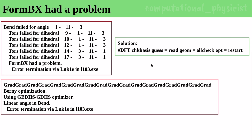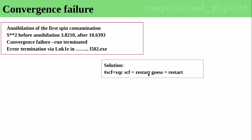The next problem is convergence failure. Sometimes this kind of convergence failure also happens. You can see annihilation of the first spin contamination — some spin-related issues you might have seen. This convergence failure is related to the l502 executable. The solution is similar to the previous one: we have to add a line in our input file — scf=xqc. The xqc option checks all previously computed geometries so that the calculation can proceed further.